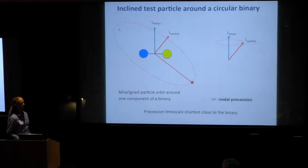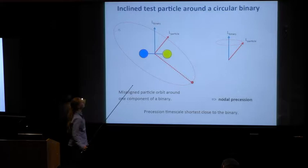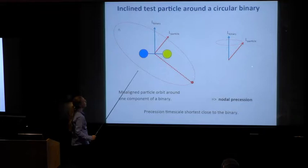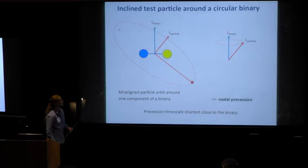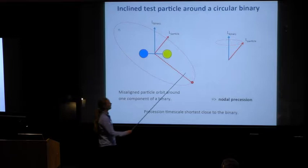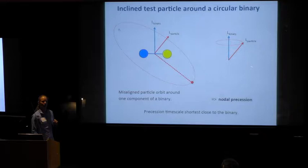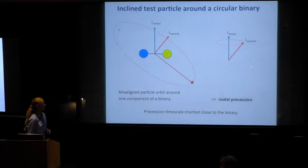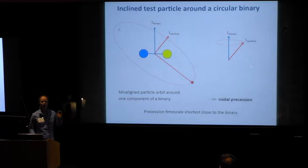Let's try to understand the dynamics of the circumbinary disk. The easiest thing first is to understand the orbit of a test particle. We have the binary, and initially I'll assume a circular binary. This is the angular momentum vector of the binary. For a misaligned test particle, the angular momentum of the test particle is in a different direction. Because of the misalignment, we get nodal precession — the plane of the test particle's orbit precesses about the angular momentum vector of the binary. During this precession, the inclination remains constant. The timescale depends on distance from the binary: the closer you are, the faster the precession rate.